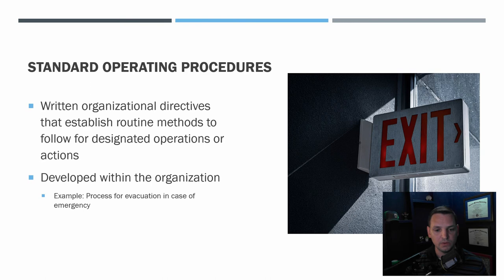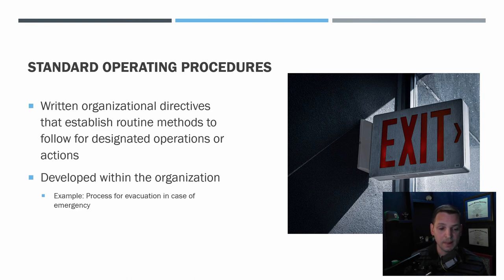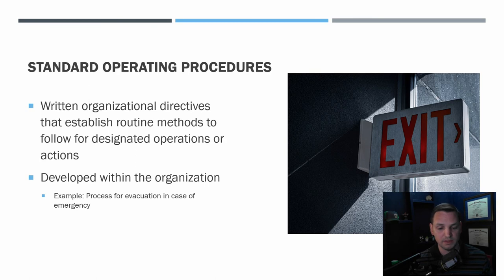Standard operating procedures are written organizational directives that establish routine methods to follow for designated operations or actions. They're developed within the organization — not laws, but internal procedures. The difference between an SOP and a policy is that a procedure is a process, while a policy is an action you can or can't do. A great example is an evacuation process in case of emergency — most organizations are required to have a fire evacuation plan per the fire marshal for their certificate of occupancy.